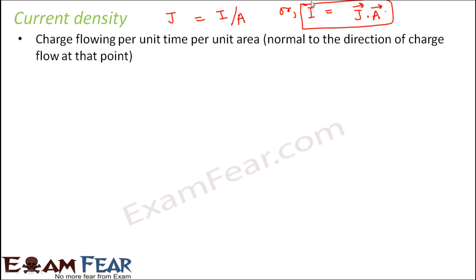The direction of current density is the same as the direction of current flow. This brings up the concept of area vector. Area is normally a scalar quantity, but here we also care about the orientation of the area with respect to current flow, which is why we use an area vector.